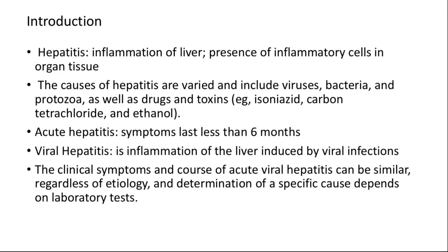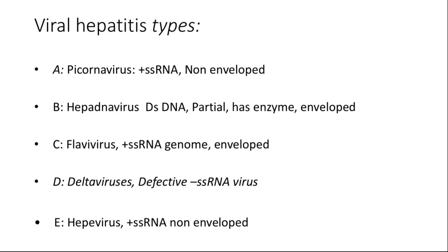Most cases of acute viral hepatitis in children as well as adults are caused by one of five agents: Hepatitis A virus, Hepatitis B virus, Hepatitis C virus, Hepatitis D virus, and Hepatitis E virus. Other viruses like Epstein-Barr virus and cytomegalovirus can also cause inflammation of the liver, but hepatitis is not the primary disease caused by them. Let us discuss each of the hepatitis viruses in detail.